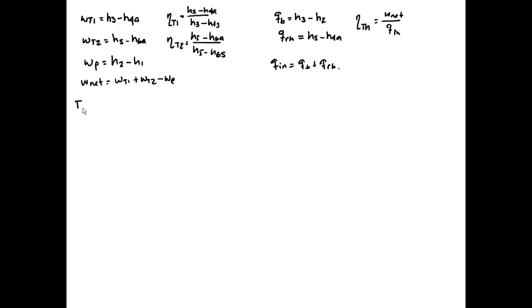State 1: we have two properties - x1 equals 0, pressure equals 10 kilopascal. From table A5, we have h1 equals 191.81 kilojoules per kilogram.